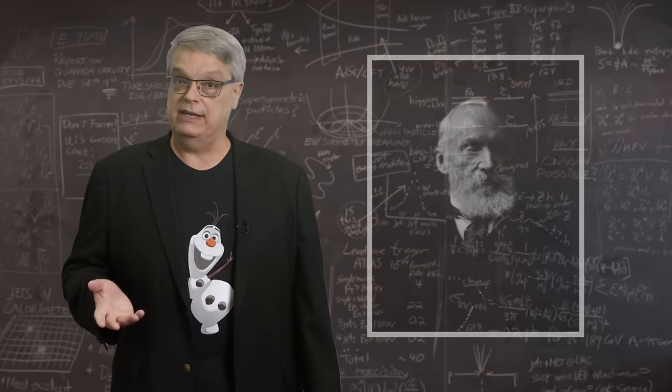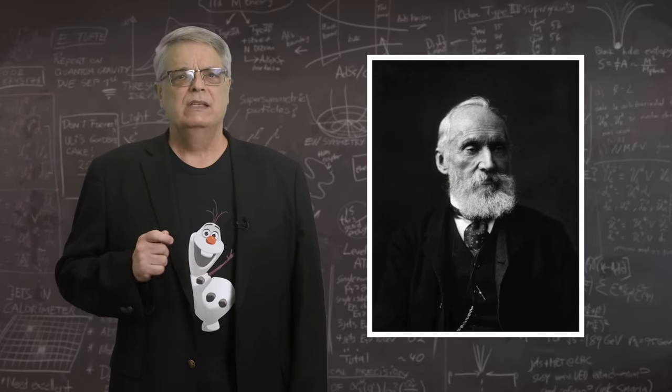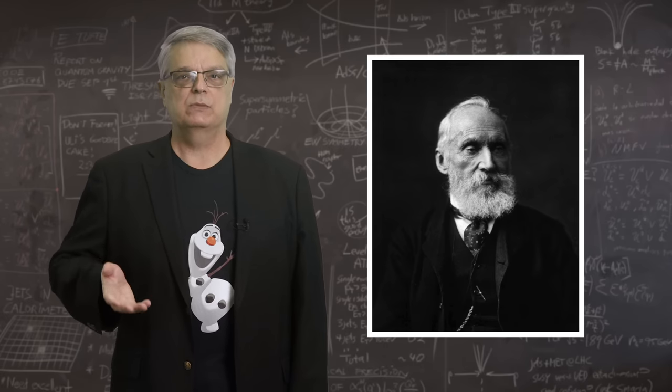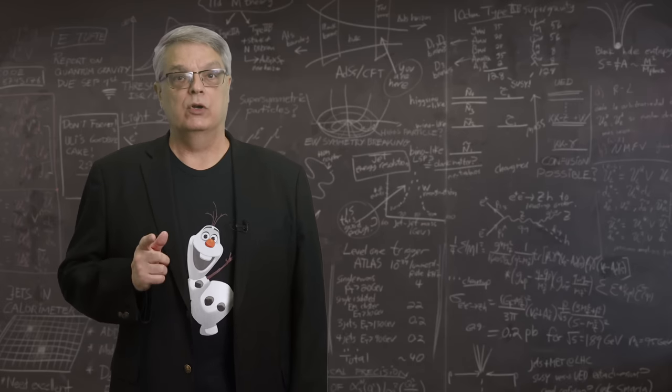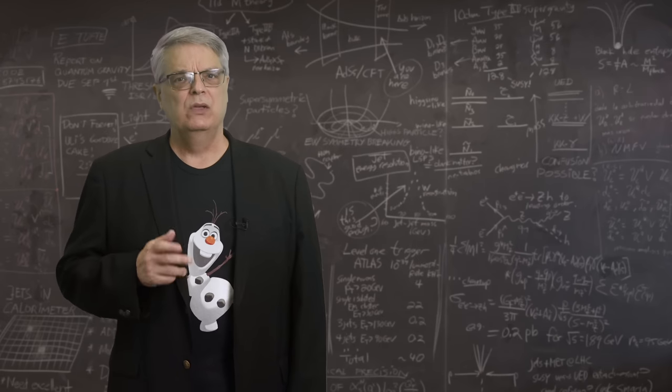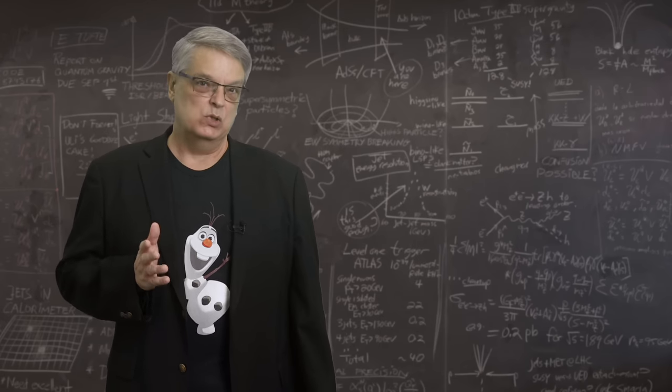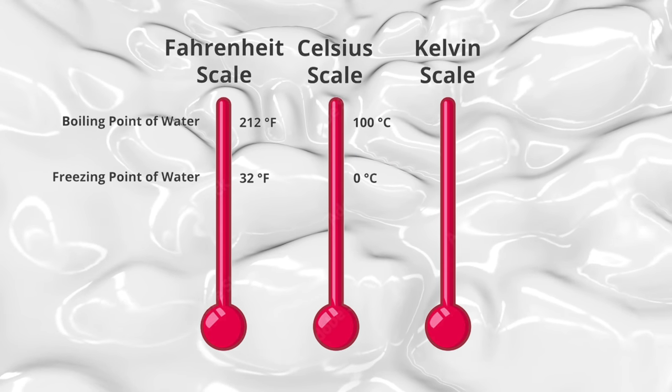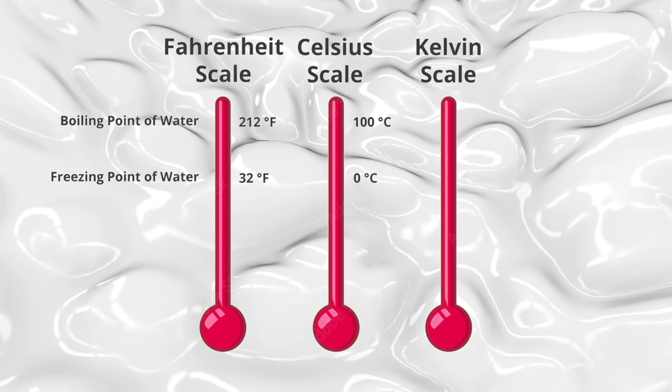However, there is a scale called the Kelvin scale after Lord Kelvin that is much more natural. To start with, Kelvin postulated that there was a coldest possible temperature. Thinking on a molecular or atomic scale, the coldest possible temperature would be the one in which the motion of the atoms was at an absolute minimum. Classically, we'd say that this temperature is when molecules inside the object weren't moving at all, although the quantum picture is a little different.